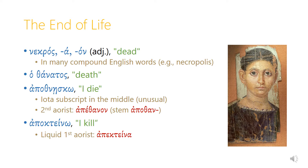The basic adjective meaning 'dead' is nekros, nekra, nekron, and we see this show up in many compound English words, like nekropolis — the city of the dead. The noun for death is hothanatos, and the verb 'I die' is apothnesco. Notice there's an iota subscript in the middle of this word, which is actually very unusual. The second aorist form of apothnesco is apethanon, and note that the second aorist stem is apothan rather than apothnesc.